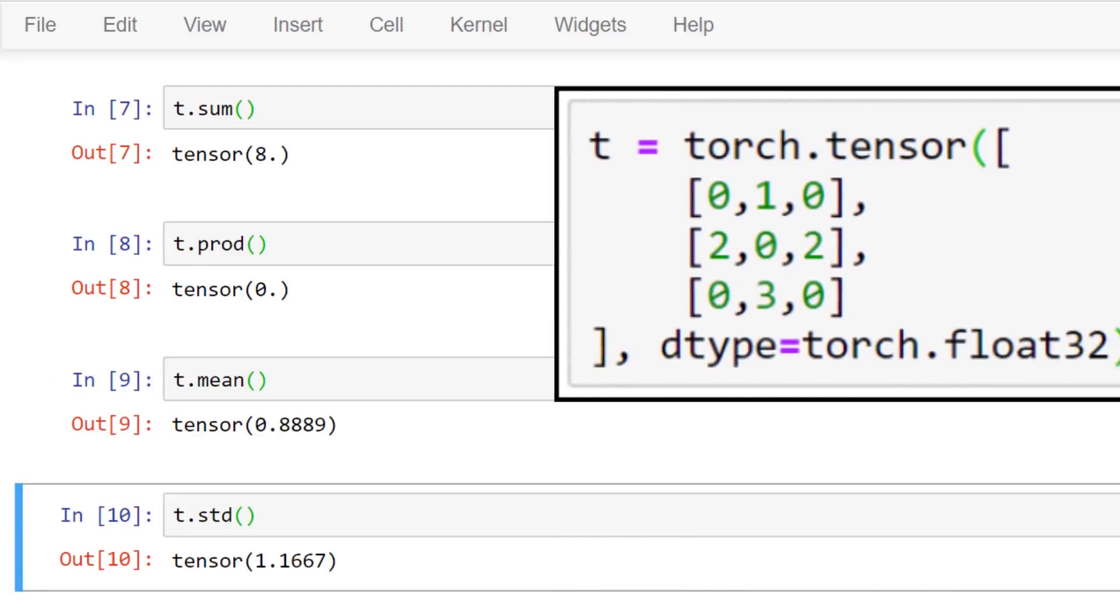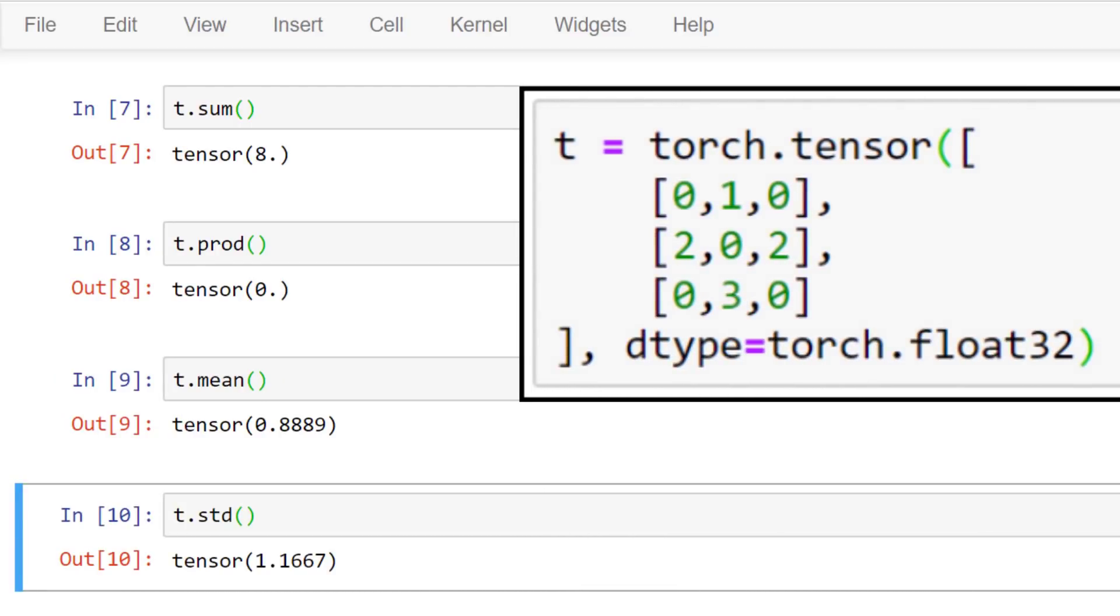All of these tensor methods reduce the tensor to a single element scalar value tensor by operating on all the tensor's elements. Reduction operations in general allow us to compute aggregate total values across data structures. Here's a question though. Do reduction operations always reduce to a tensor with a single element? The answer to this question is no. In fact, we often reduce specific axes at a time. And this usually leads to a reduction output that has multiple elements. To reduce a tensor with respect to a specific axis, we use the same methods and we just pass a value for the dimension parameter.